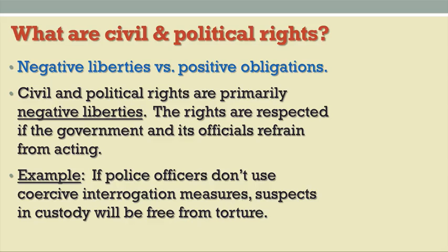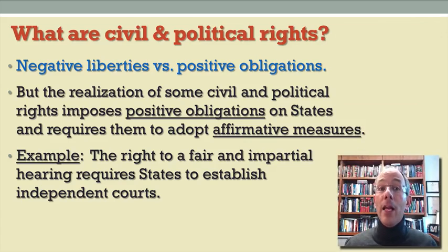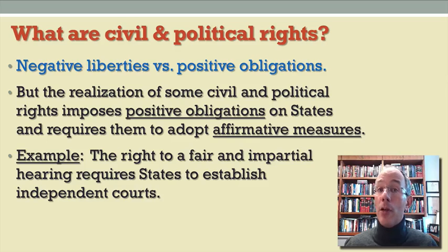An important distinction I now want to introduce is the one between so-called negative liberties and positive obligations. Civil and political rights are overwhelmingly negative liberties — these are rights that can be respected if the government concerned refrains from acting. For example, if police officers don't use coercive interrogation measures, or if state officials refrain from engaging in extrajudicial killing, then the rights to be free from torture and the right to life will be respected. Conversely, there are some civil and political rights that impose positive obligations by the state and require affirmative measures in order to satisfy those rights. A good example is the right to a fair and impartial hearing or trial, which requires states to set up independent courts.